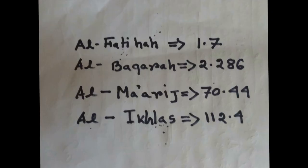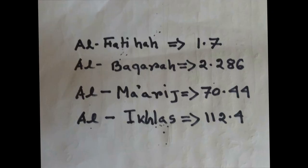Surah Al-Ma'arij is chapter 70 with 44 verses, so its mathematical value is 70.44. Surah Ikhlas is chapter 112 with 4 verses, so its mathematical value is 112.4, and so on.